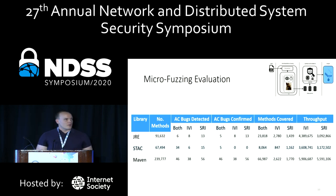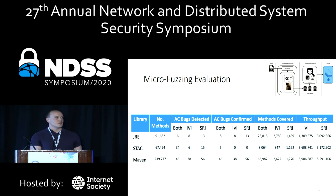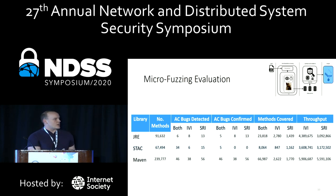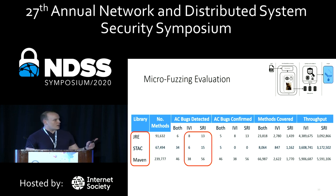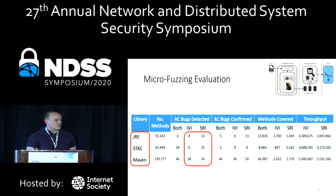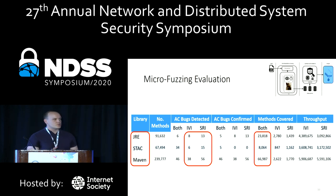We had two goals for evaluating our technique. First, is micro-fuzzing effective at detecting real AC bugs? Second, does our seed input instantiation strategy SRI improve upon the baseline IVI? For the artifacts we considered — every method in the Java runtime environment, the challenges in the DARPA STAC program, and the 100 most popular libraries on Maven — we observed that SRI outperformed IVI for each artifact, and micro-fuzzing was able to successfully execute tens of thousands of Java methods without requiring any manual intervention for constructing the test harness.